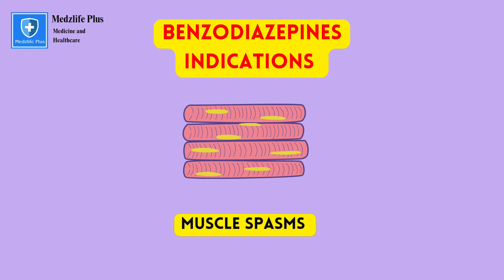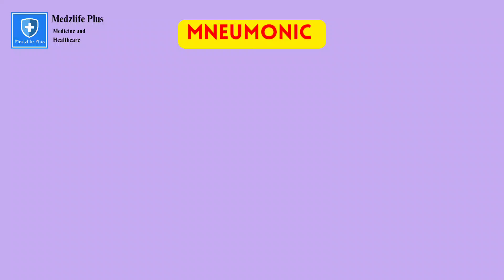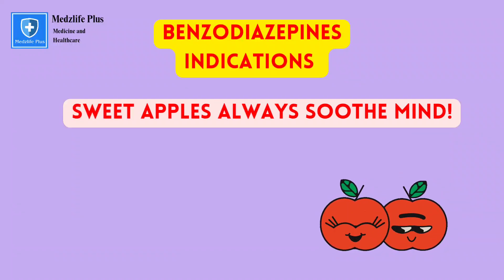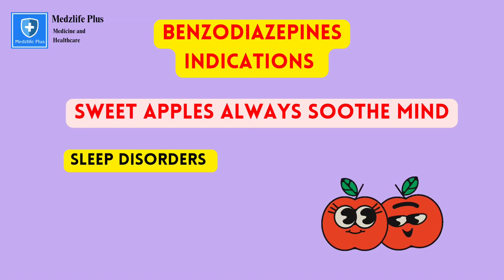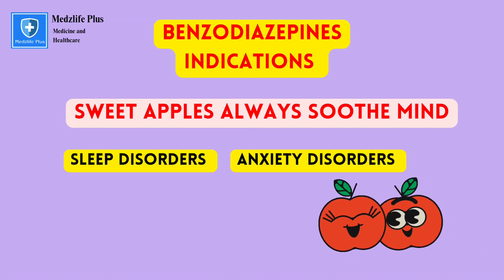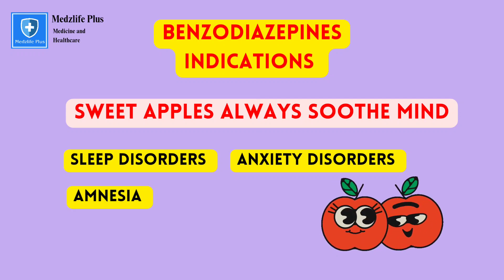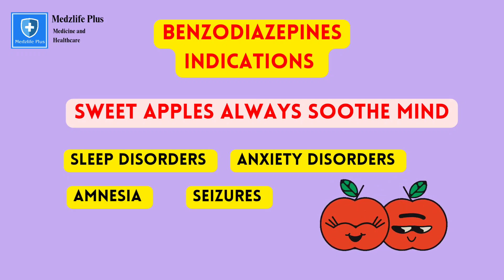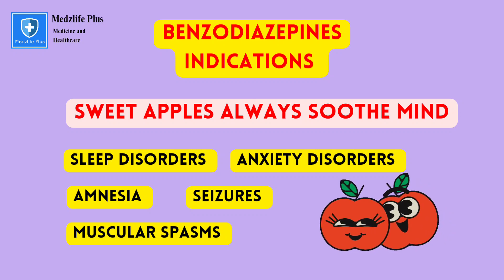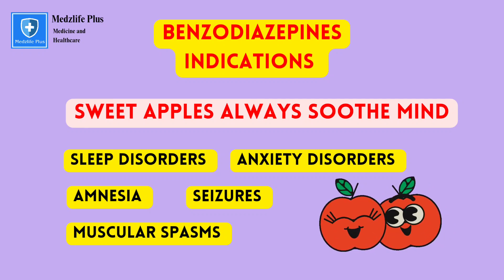Diazepam and clonazepam can be effective in relieving muscle spasms and promoting muscle relaxation. A simple mnemonic to remember the indications is 'Sweet apples always soothe mind': S for sleep disorders, A for anxiety disorders, A for amnestic effects, S for seizures, and M for muscle spasms.